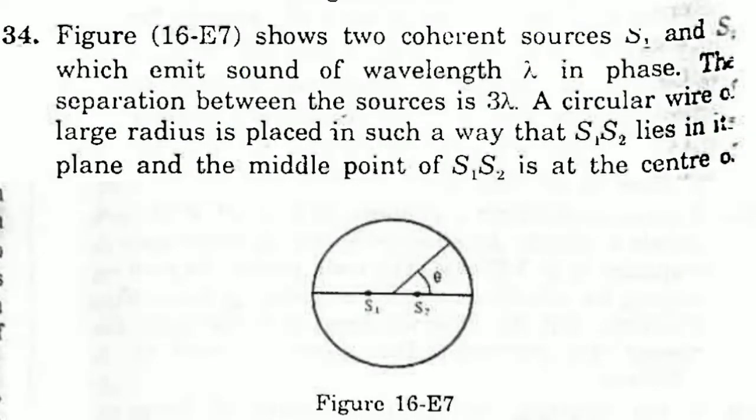HC Verma solution, Chapter 16, Sound Waves, question number 34. The figure shows two coherent sources s1 and s2 emitting sound of wavelength lambda in phase. The separation between the sources is 3 lambda. A circular wire of large radius is placed such that s1 and s2 lie in its plane, with the midpoint of s1s2 at the center of the wire. Find the angular position theta on the wire for which constructive interference takes place.